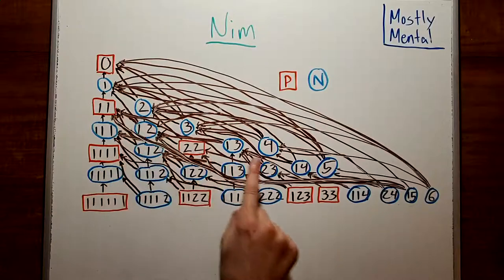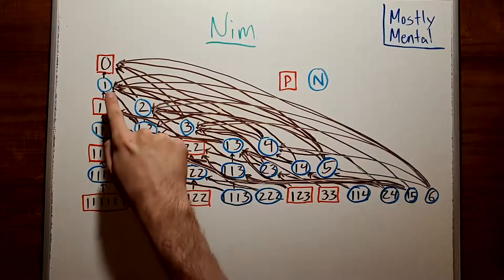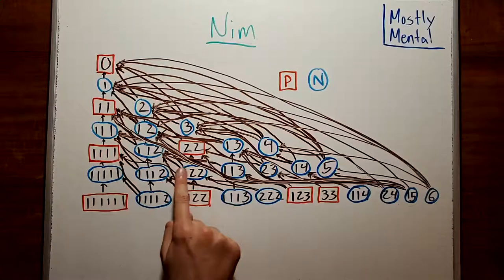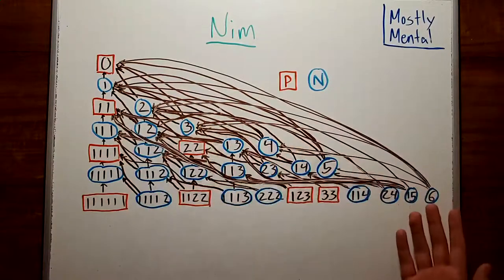For instance, if there's only one pile, it's always an N position. And if every pile has one counter, then it's a P position if there's an even number, and N if there's an odd number. And in fact, all of our P positions seem to have an even sum. But it's still kind of hard to see the big picture. To do that, we'd want to look at a lot more positions. It's getting tedious to draw all these by hand, and it's already a tangled mess.